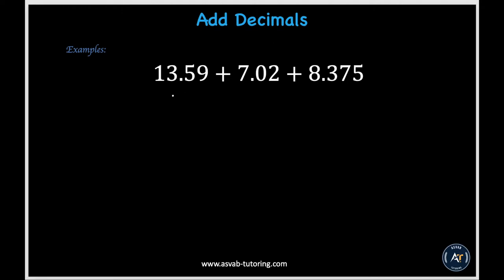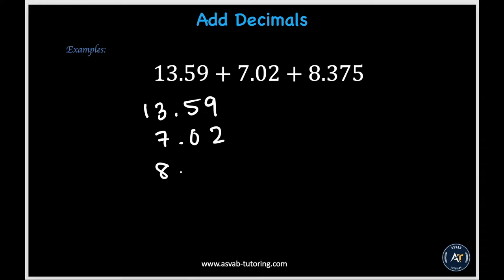Let's learn how to add decimals. In this example we have 13.59 plus 7.02 plus 8.375. In order to do this correctly, we'll use column addition and make sure all our decimal points are lined up underneath each other to ensure that all place values are equally aligned. So we have 13.59, then 7.02, and then 8.375. Notice how all the decimal points are lined up underneath each other — that's how we know we can get started with adding.